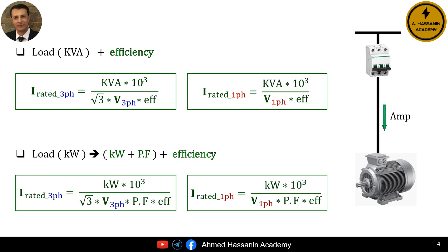We must note that if the load value is given in KW and we want to calculate the rated load current, we also need the power factor in addition to the load value in KW. If we do not have the power factor value, we can assume it to be 0.8. For the case where the load value is in KW and we have the power factor and efficiency of the motor, for a three-phase dynamic load or three-phase motor, the equation for the rated current is the rated power in KW multiplied by 10 cubed, divided by the square root of 3, the three-phase rated voltage in volts, the power factor, and the efficiency of the motor.